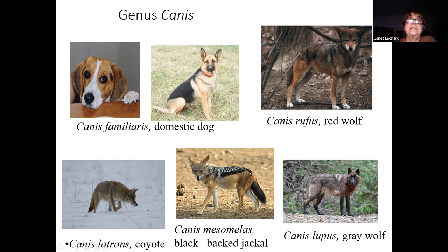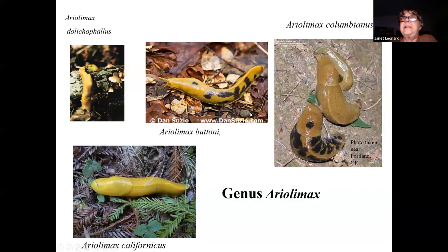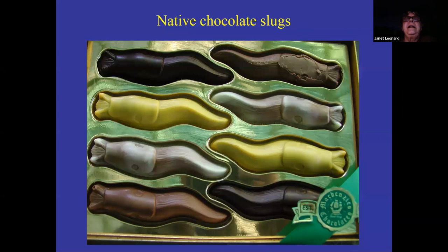Areolimax — here are four of the eight species. Areolimax dolichophallus, which is the Santa Cruz County species. Areolimax californicus, which we have here in San Mateo County — this picture was taken in Grabtown Gulch. Areolimax buttoni from the north and east bay and into Yosemite. And Areolimax columbianus, which runs from extreme northern California up to Juneau, Alaska — a very wide range. Now this box of chocolate banana slugs from McKenzie's in Santa Cruz actually shows more external morphological variation than you see in all eight species of wild banana slugs.